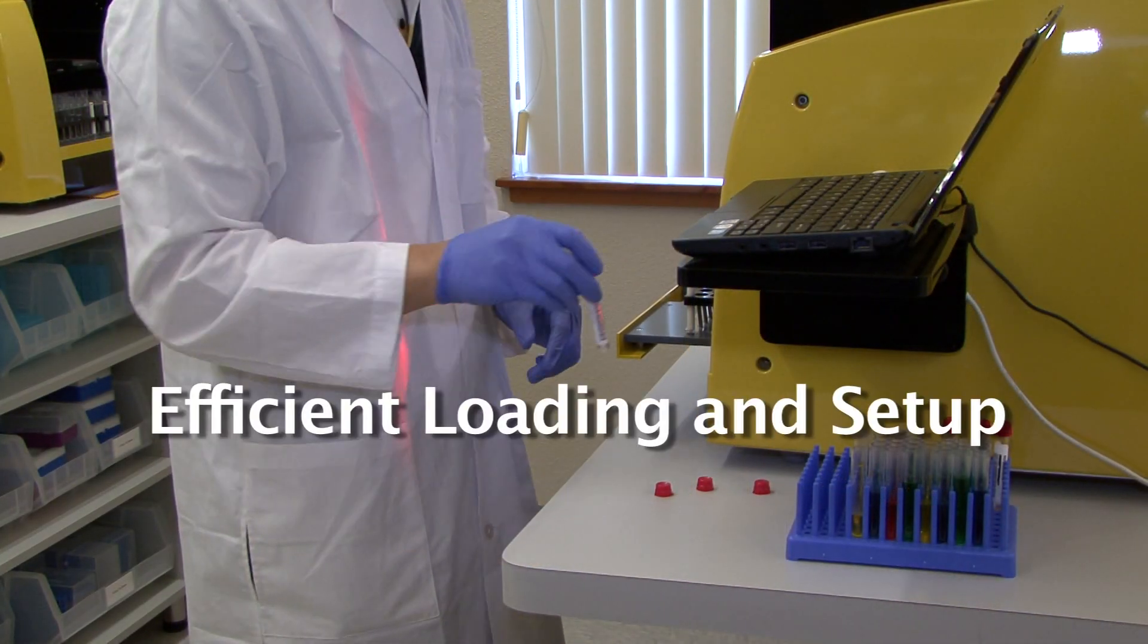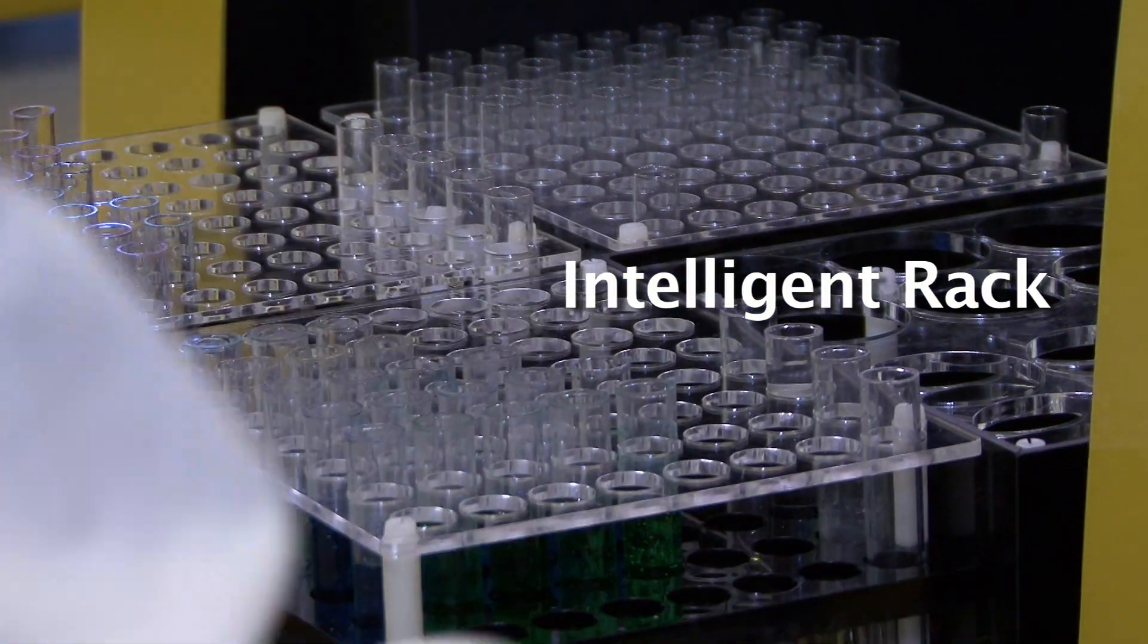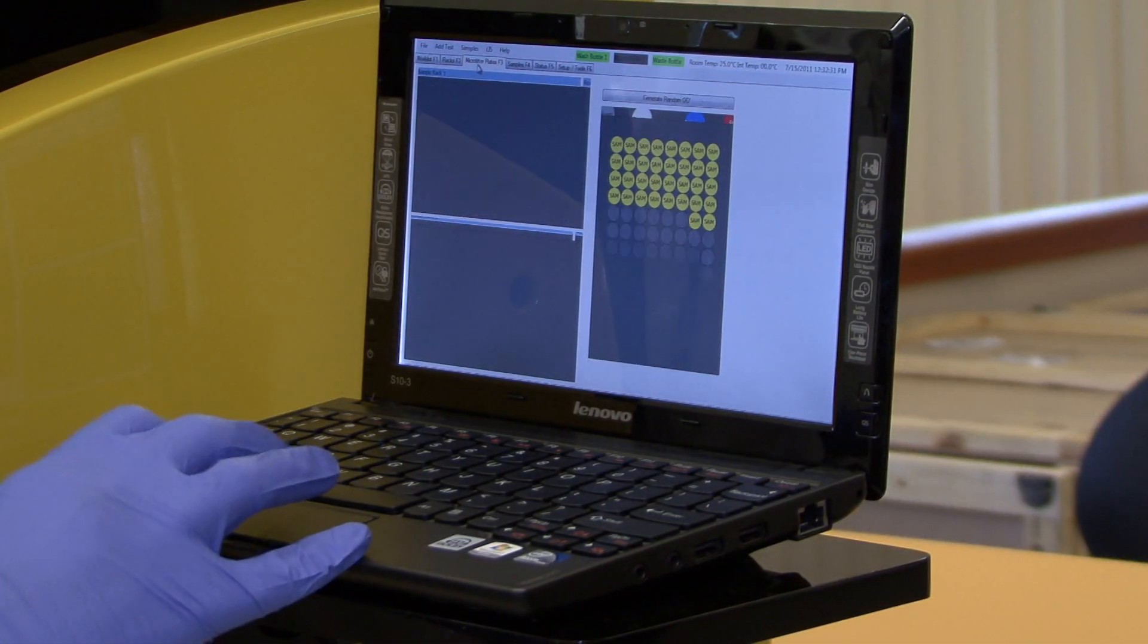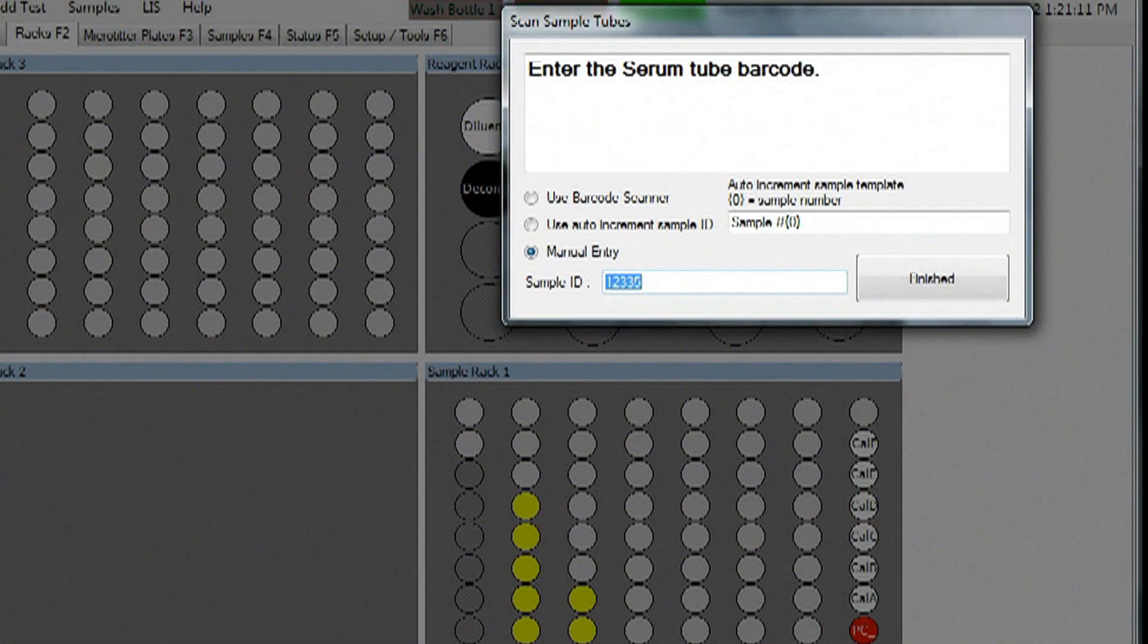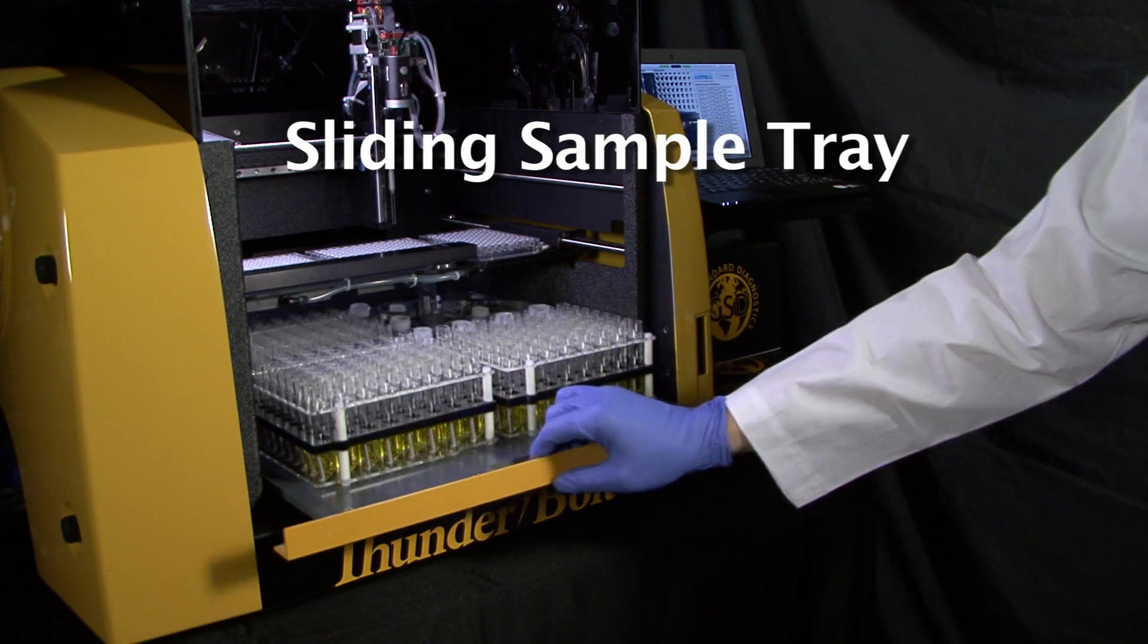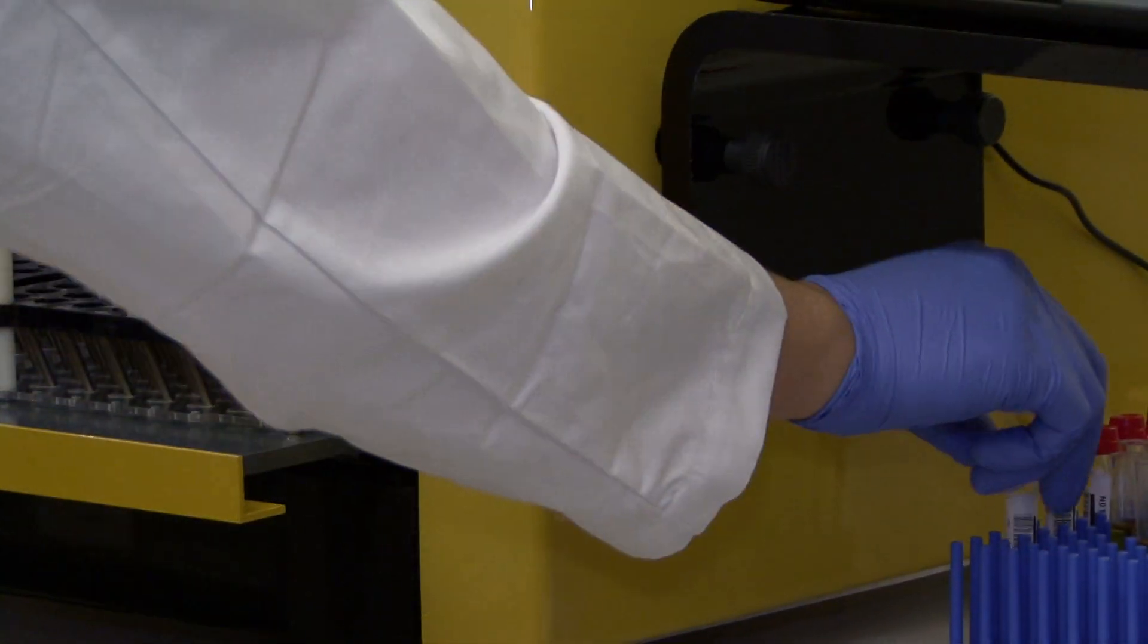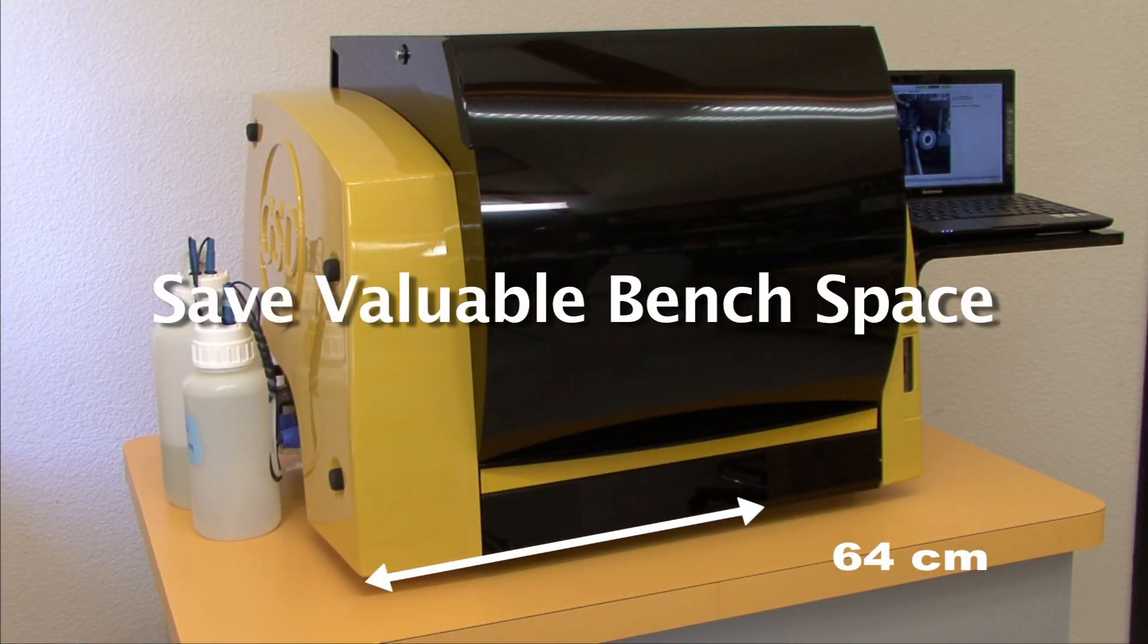The Thunderbolt offers efficient loading and setup. Patented intelligent rack technology knows where a test tube has been loaded, and the software records the location. Combined with the built-in barcode reader and the sliding sample tray, the Thunderbolt streamlines setup while decreasing errors.